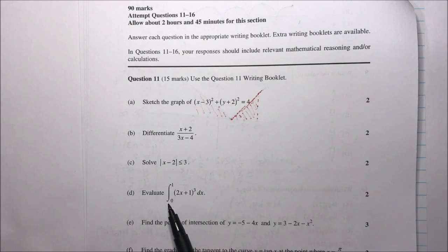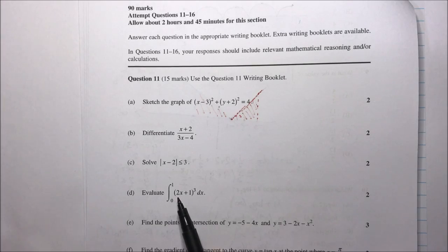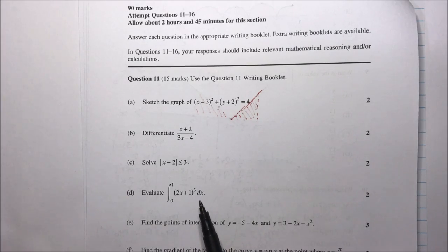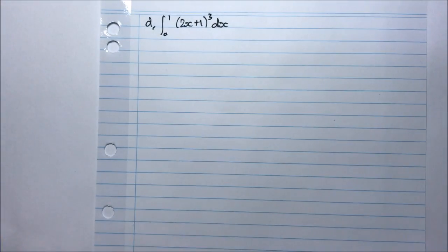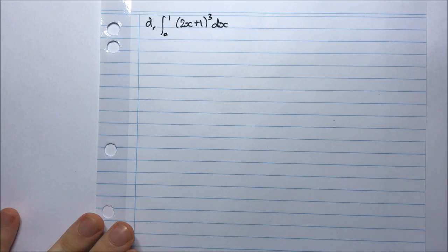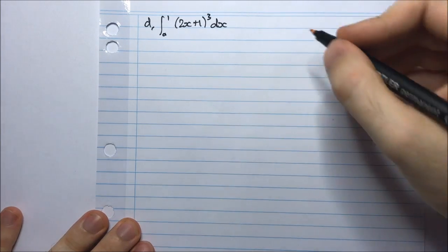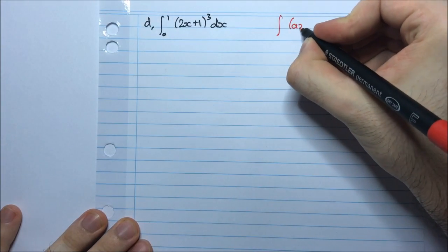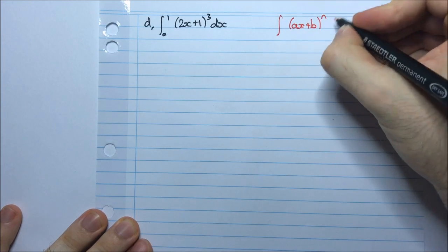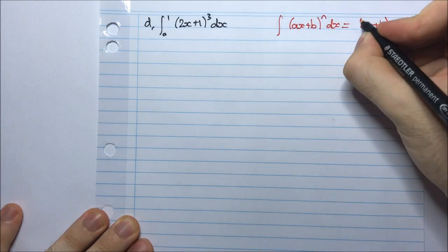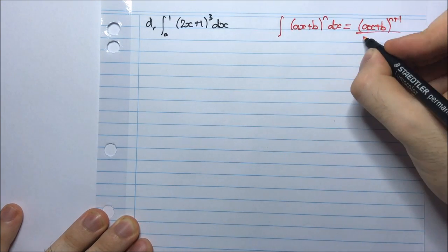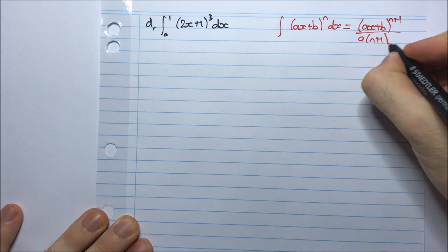Part D. Evaluate the integral from 0 to 1 of (2x + 1)³ dx. Hopefully you're familiar with how to do this type of integral. But if you're not, that's okay because it's actually given to you on the back of the exam paper in the formula sheet.